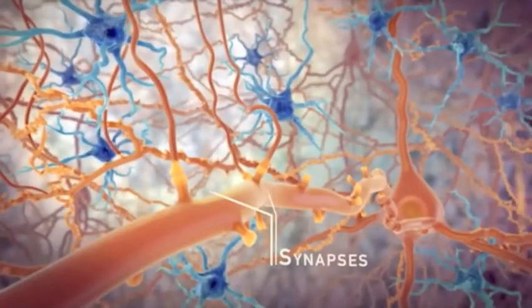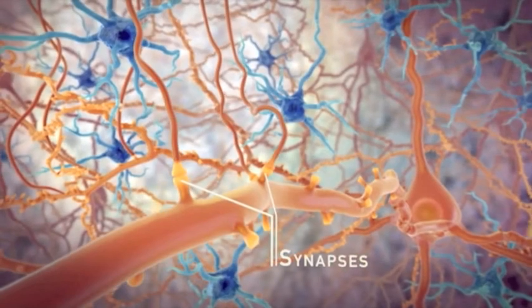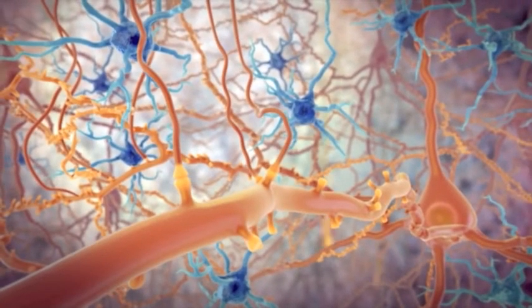In the brain, connections between neurons are called synapses, and these have to be strengthened to convert short-term memories into long-term memories.